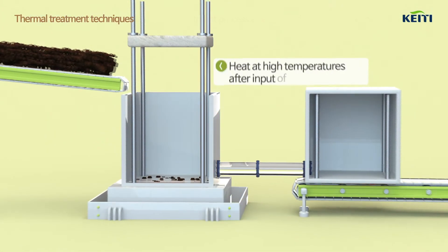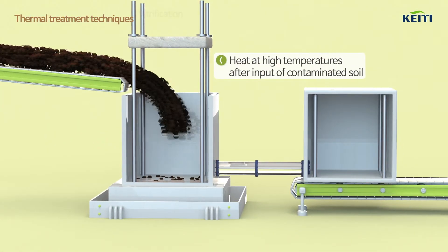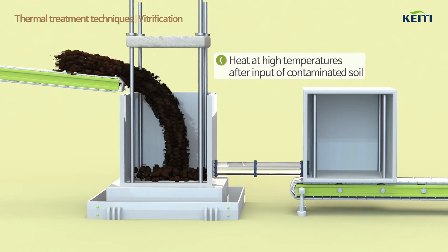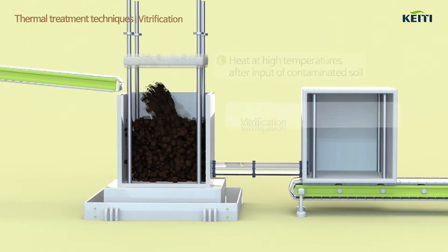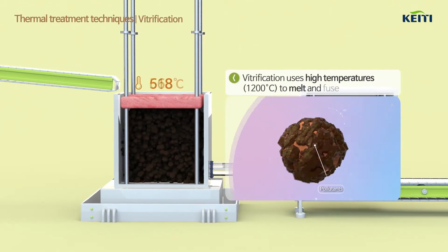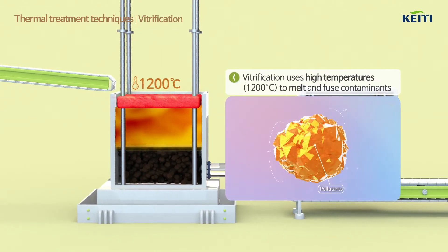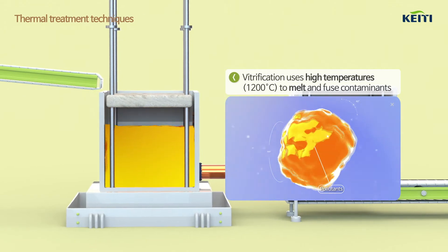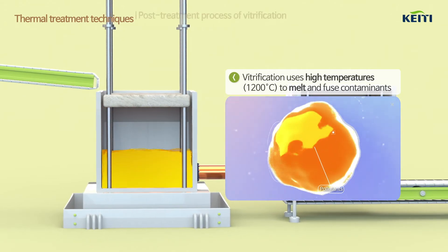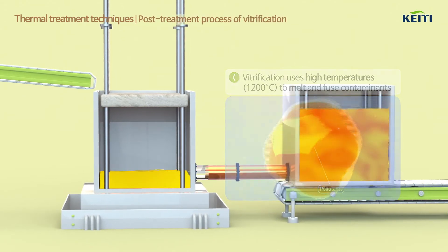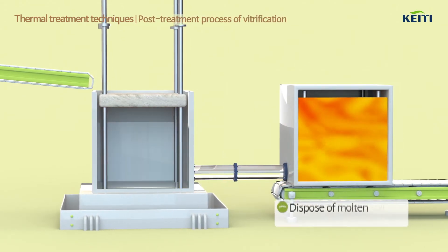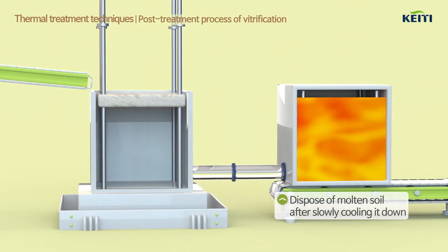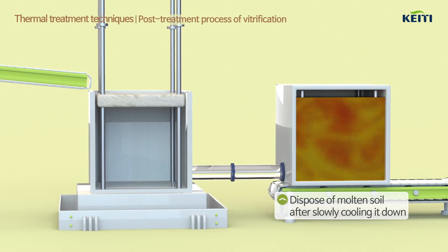Vitrification converts contaminated soil into a liquid, molten state by applying heat at temperatures higher than 1200 degrees Celsius. The molten soil is then disposed of after cooling.